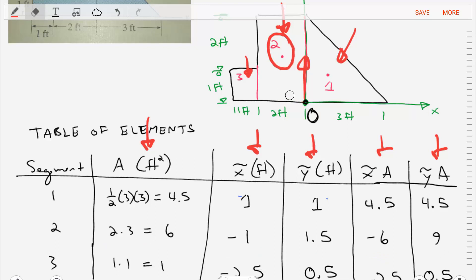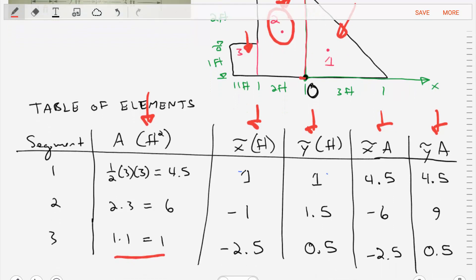Our last one here is the square, element 3. The square is 1 by 1. Its x position is at negative 2.5. Its y position is at 0.5. And then those other two terms we can calculate straightforward.